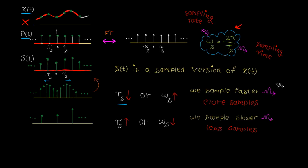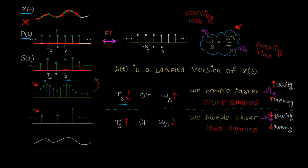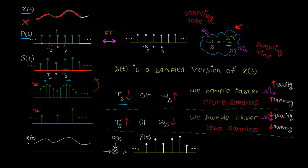There is always a trade-off between quality and memory storage. With more samples, the quality is higher and the sampled signal is a better representation of the continuous signal, but you need more memory to store all those samples. With fewer samples, the quality is lower since you have a sparse representation, but you need less memory. So, to make a continuous signal x(t) discrete, the first step is to multiply it by p(t), giving us the sampled version s(t).